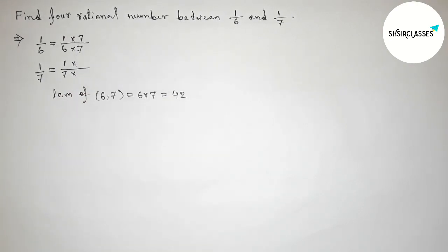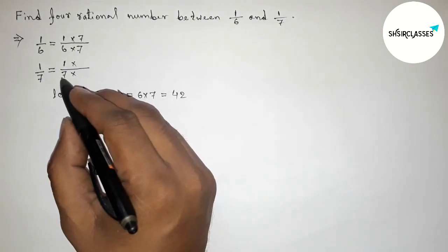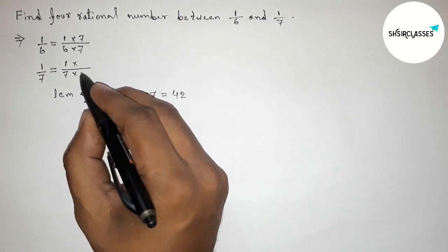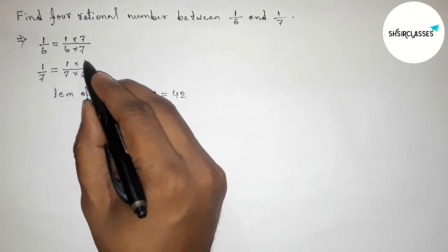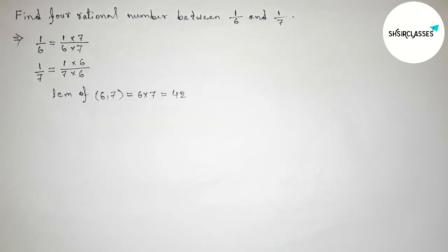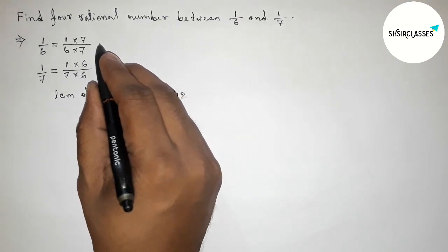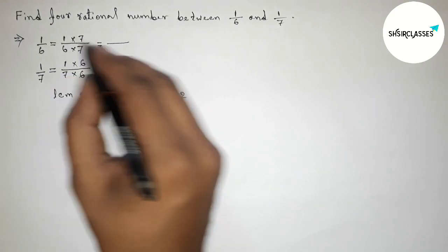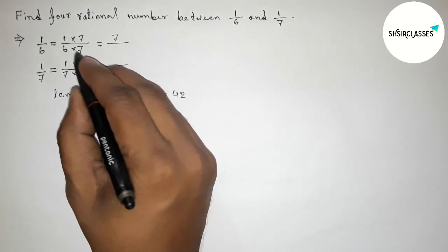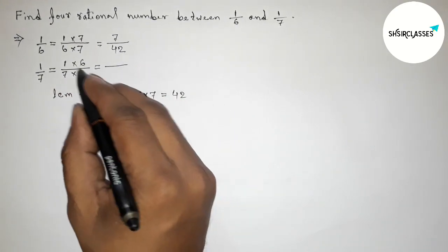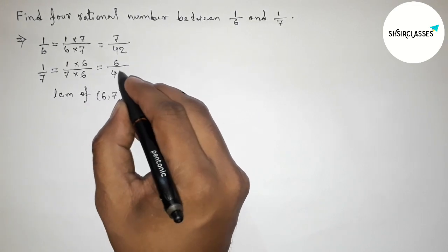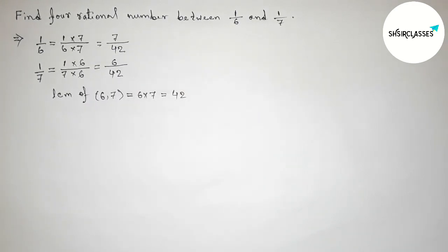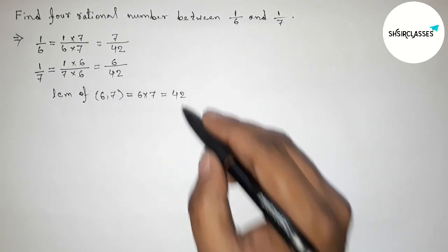So first making 42 denominator, so 6 times 7 is 42, so taking 7 up and down. Similarly here, 7 times 6 is 42, so taking 6 up and down. So now equals to 7 by 42 and here 6 by 42.